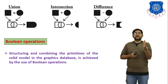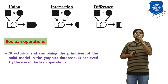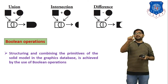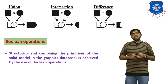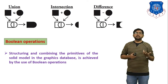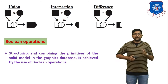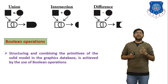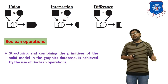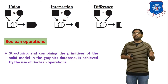The third operation is difference, which means we subtract the circle from the square. The remaining body after subtraction is the value of the difference of those two bodies. These are all the Boolean operations that we apply in Constructive Solid Geometry. Using Boolean operations you can subtract, add, or combine bodies in the graphic database of the solid model.